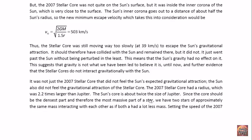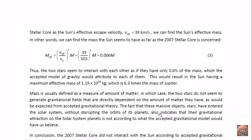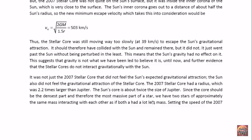However, the 2007 stellar core had a radius which was 2.2 times larger than Jupiter. And the sun's core is about twice the size of Jupiter. So since the core should be the densest part and therefore the most massive part of a star, we basically have two stars of approximately the same mass interacting with each other as if both had a lot less mass.